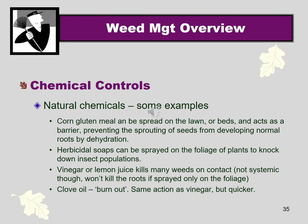Those natural options are all non-toxic, but they mostly just kill the portion of the weed you apply them to — they don't get to the roots. Avenger has some systemic action, meaning it gets down into the roots a little bit. None of them work as well as Roundup for killing the plant and all its roots, but we're compromising — choosing something not toxic that's fairly effective but not completely effective.